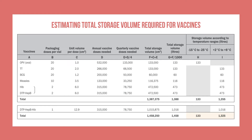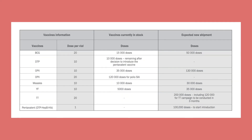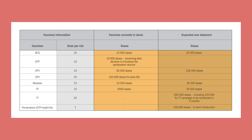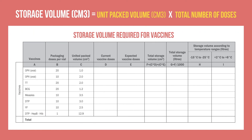Keep in mind that this table and method would be used for planning your program's routine immunization sessions. In the case of a new vaccine introduction or a supplementary immunization activity, you may need to include any vaccines currently in stock when estimating the required cold chain space for an expected new shipment. In that case, you would add the existing doses to the expected doses to determine the total number of doses to store, then multiply the total number of doses by unit packed volume to determine your storage requirements.